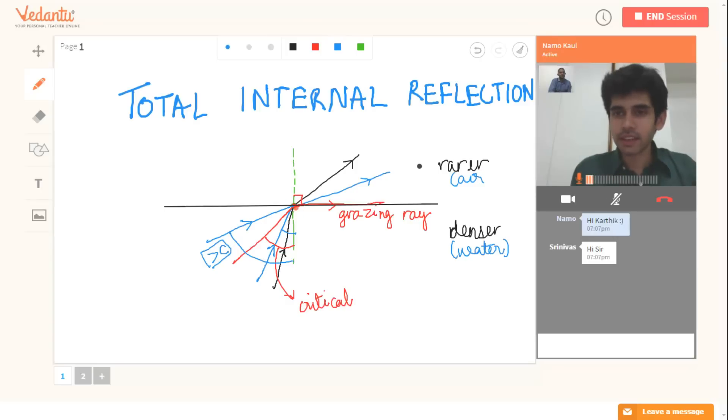So this ray will not follow the law of refraction, it will follow the law of reflection. So this will be the ray. It will follow the law of reflection in such a way that this angle of incidence should be equal to this angle of reflection. This simple phenomena is known as total internal reflection.